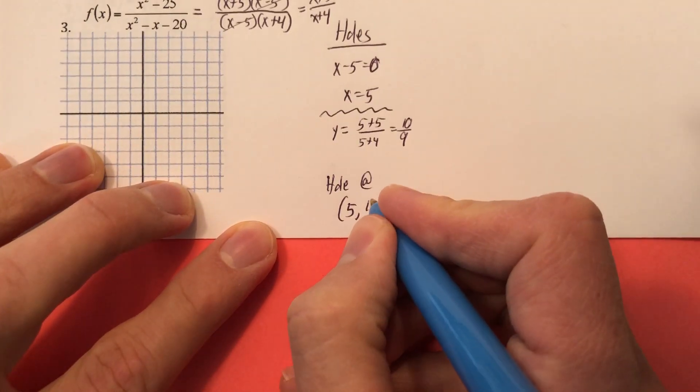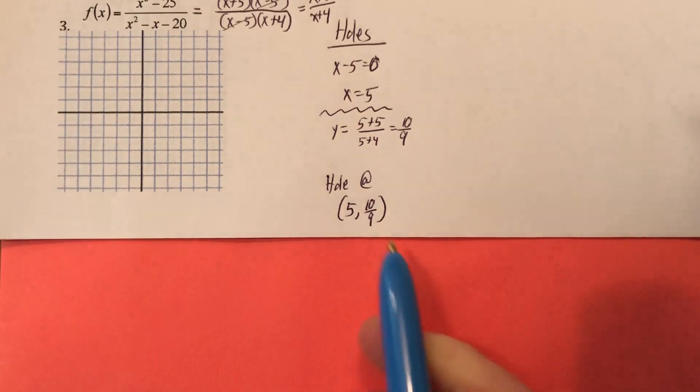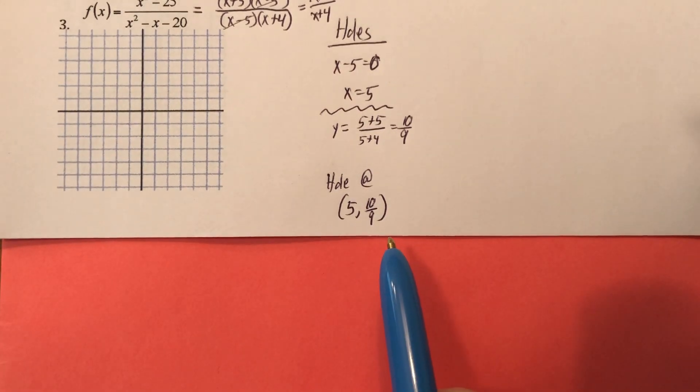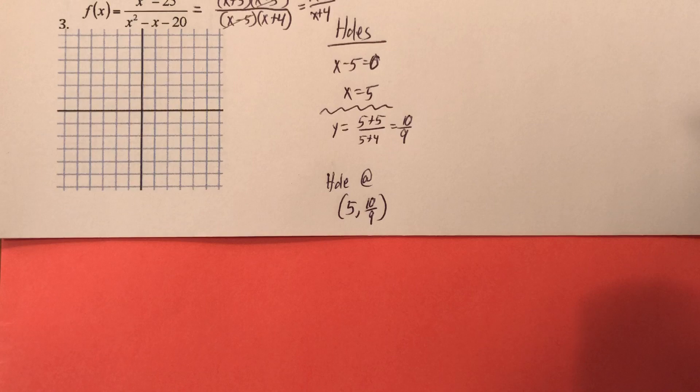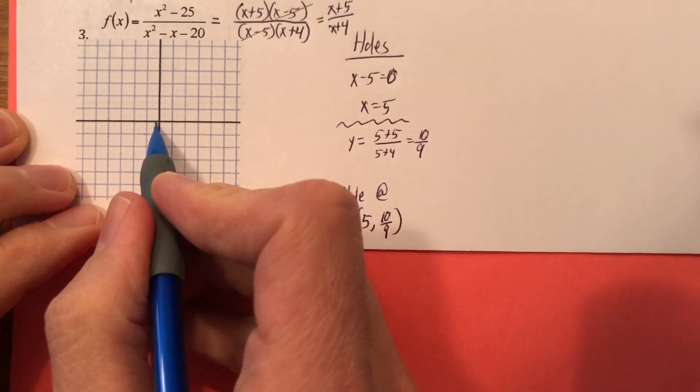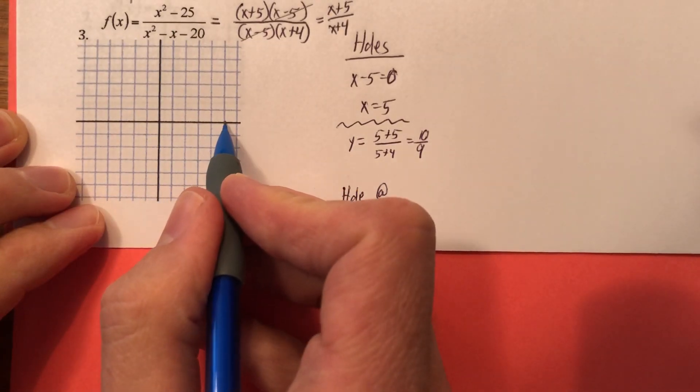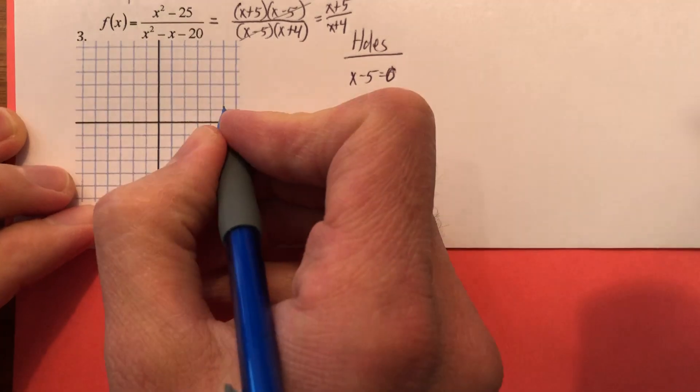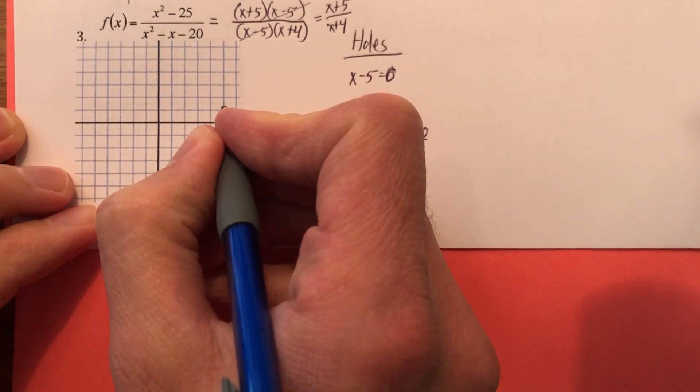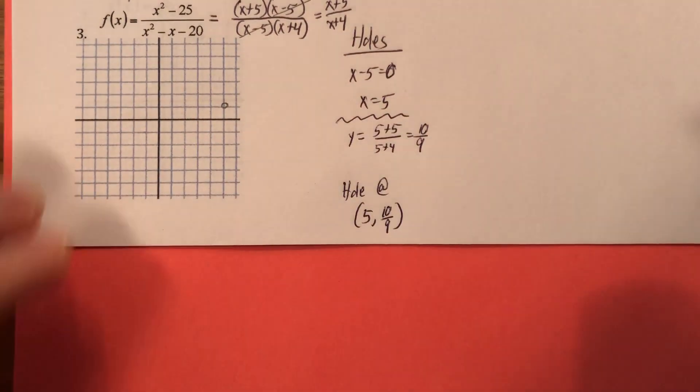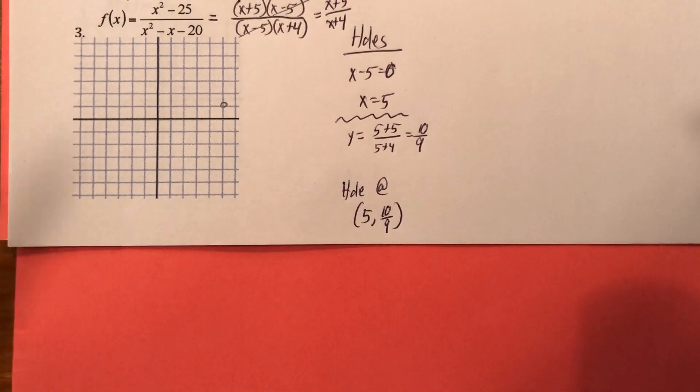And that's going to give me 10 over 9. So it's at 5 comma 10 over 9. And so 10 ninths is 1 and 1 ninth. So it's just a little bit more than 1. So there is a hole in my graph at 5. 1, 2, 3, 4, 5. And then up 1 and a little bit more. So it's about right there. It doesn't have to be perfect, but it's just a little bit above 5 comma 1. So we found the hole.